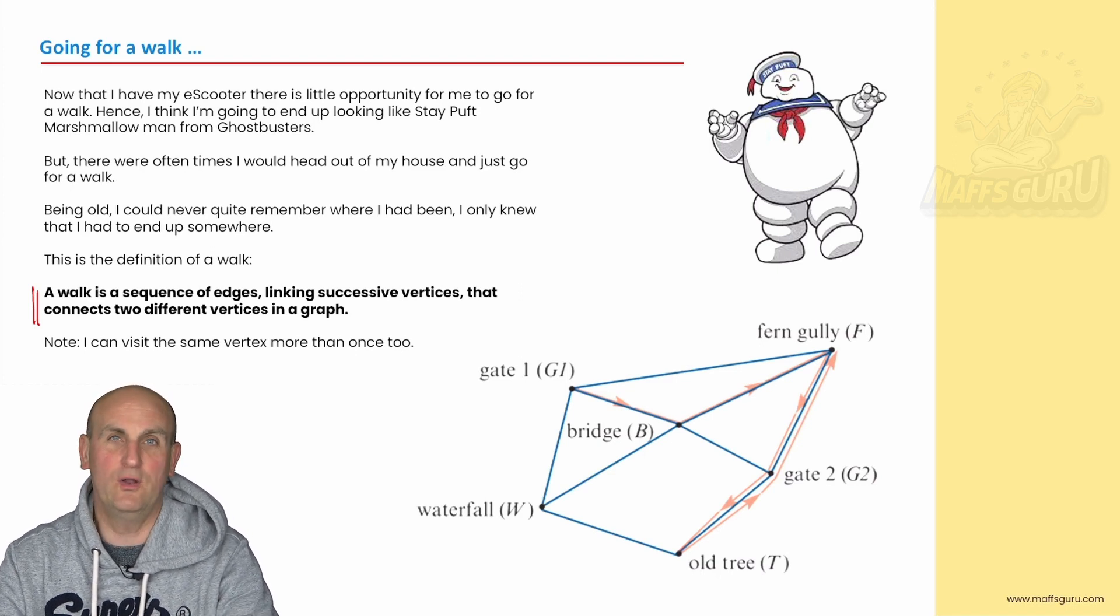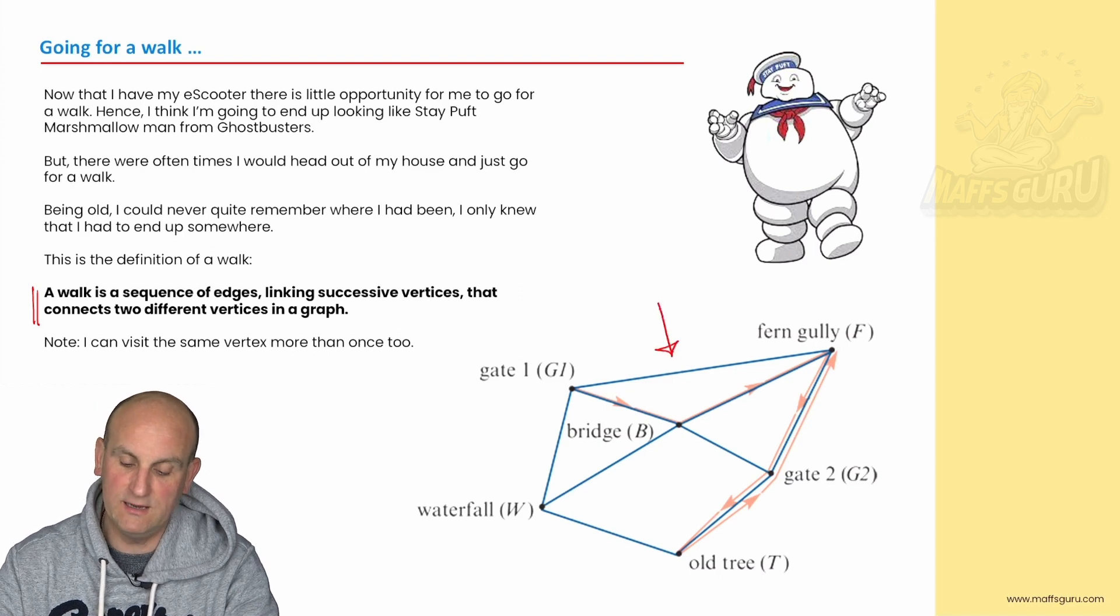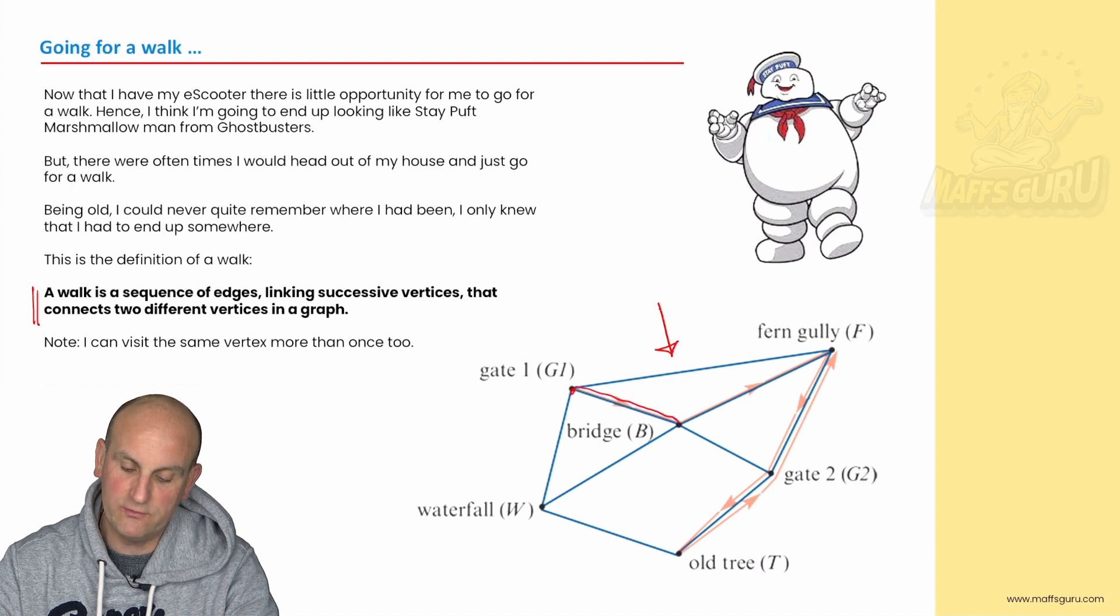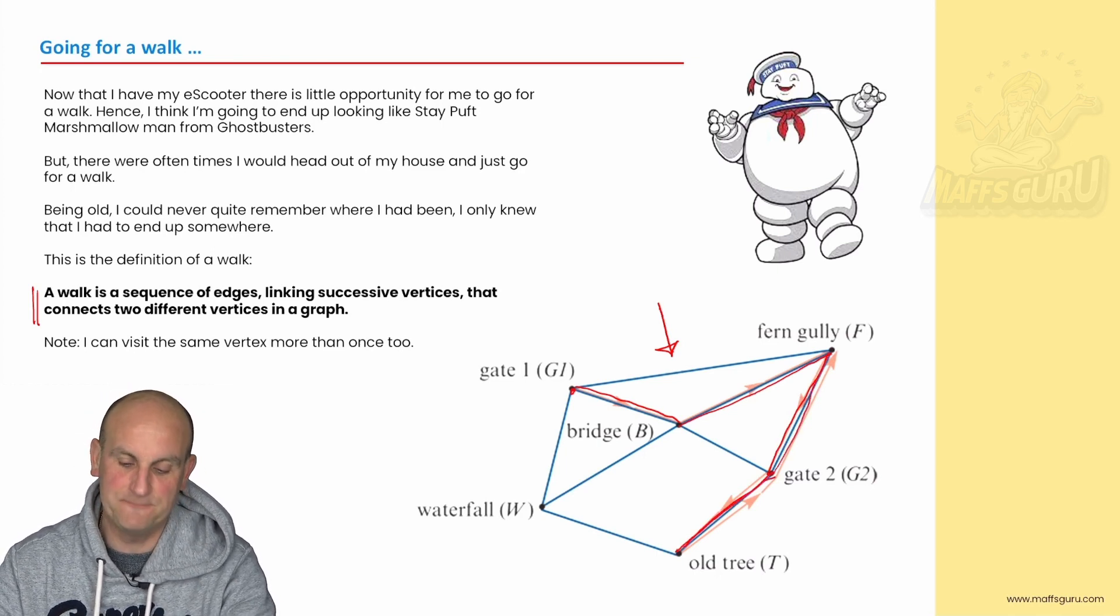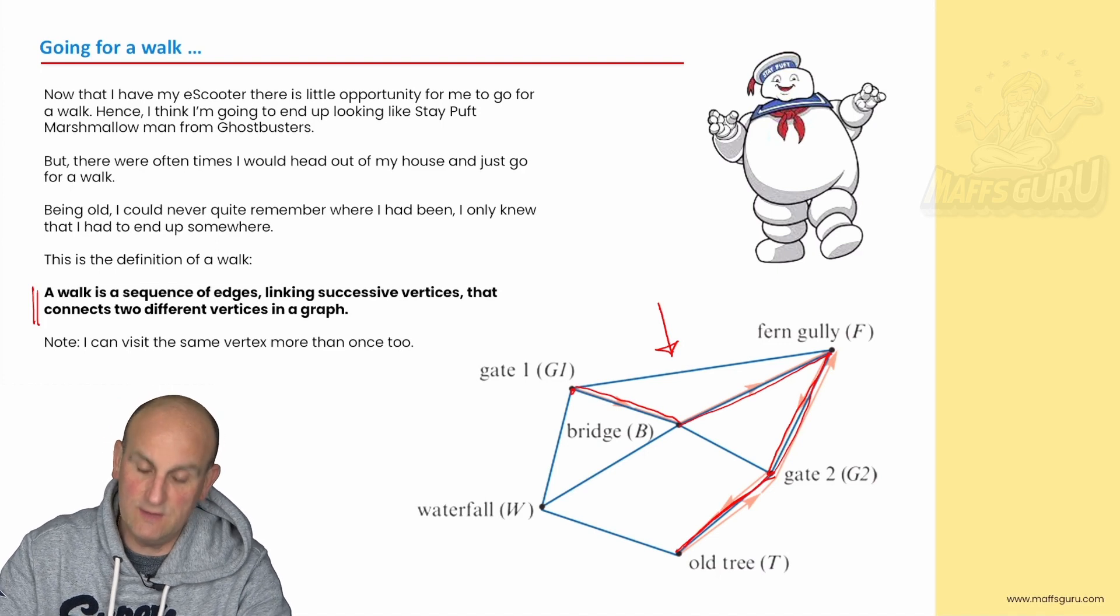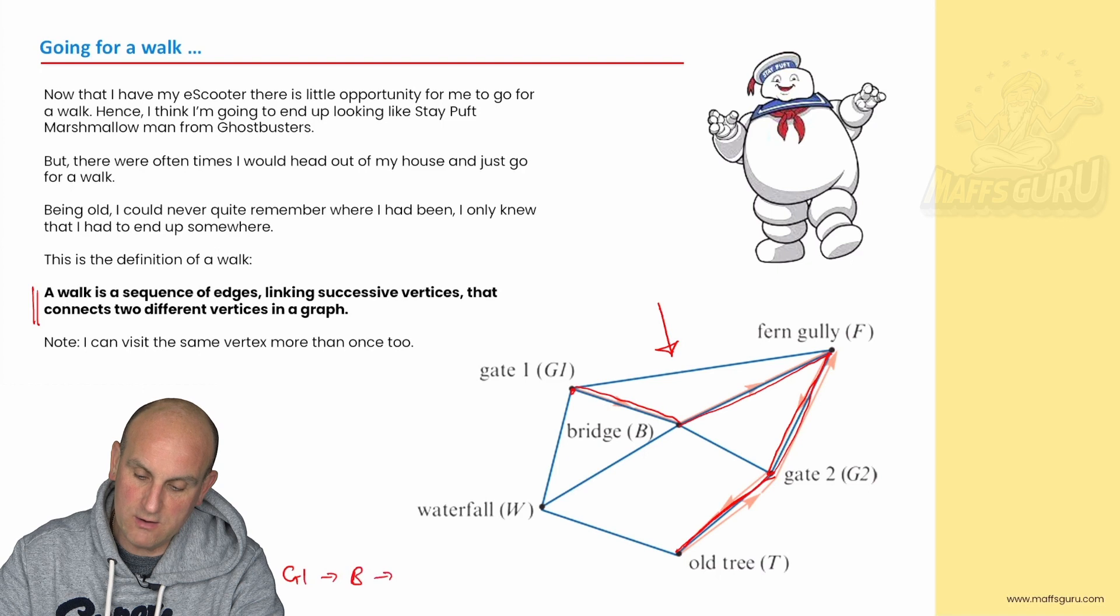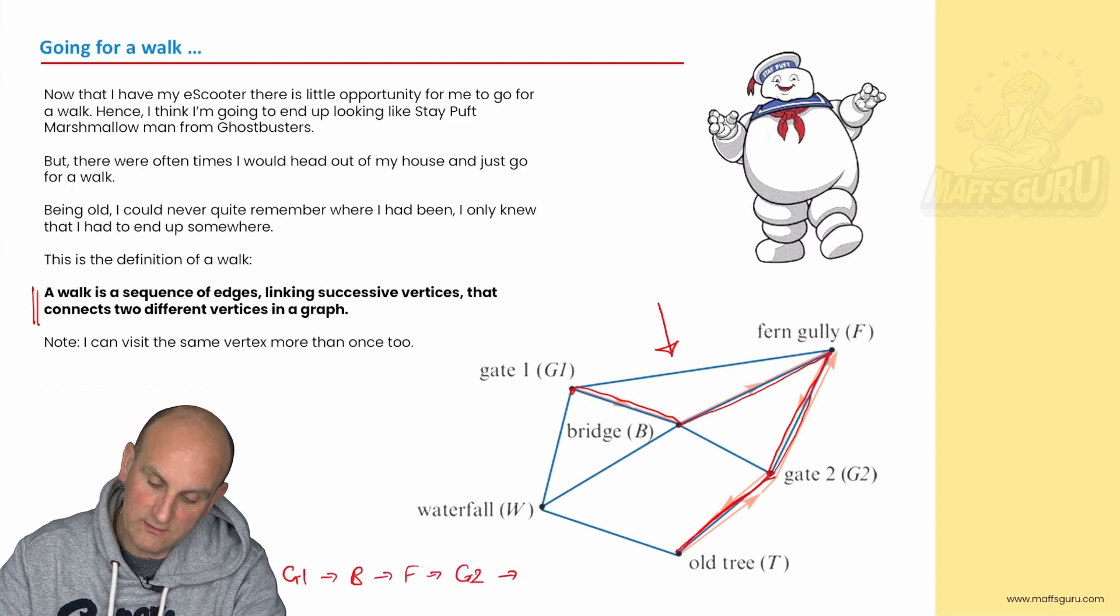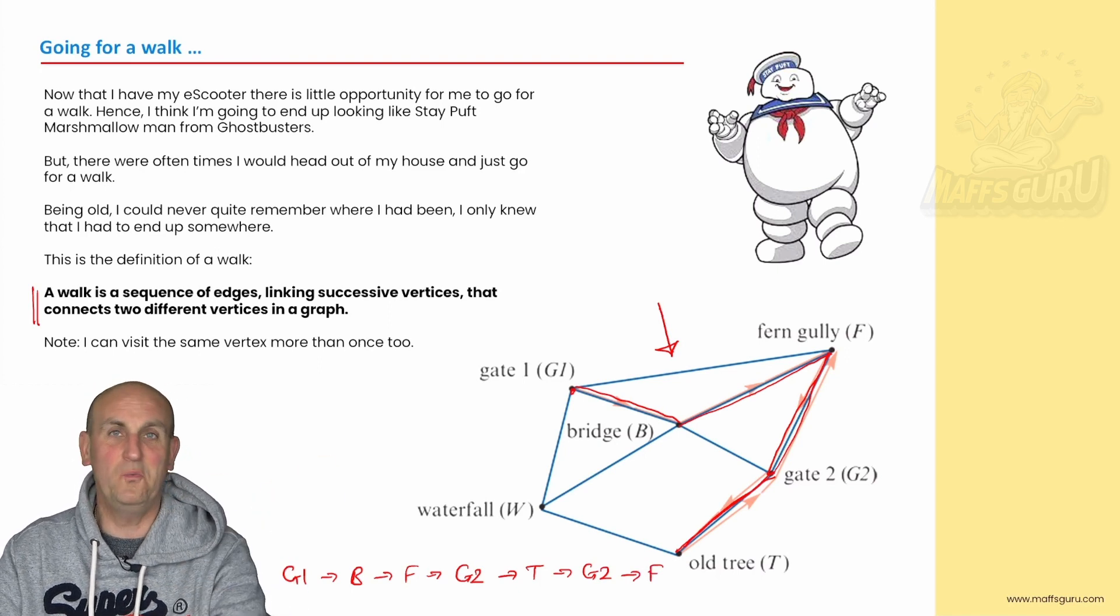Stop. Flick off YouTube, watch Ghostbusters, come back. It is amazing. But anyway, they're not walking but I should walk more. We should all walk more. As you can see here I've got a mathematical version of a walk. Again, a walk is a sequence of edges linking successive vertices that connect two different vertices in a graph. Basically it means I'm going to head out my door and walk along roads and I don't care if I repeat the roads and I don't care if I go to places more than once. I'm just going for a walk. Here is a brilliant example: I'm starting at gate one, going down to the bridge, going along to Fern Gully, going to gate two and then to the old tree. Oh, I've left my phone at Fern Gully, so I'm going to go back down that edge and end back here. So G1 to B to F to G2 to T to G2 to F. That is a walk. We can describe this using a sequence of letters and that's important for general maths.